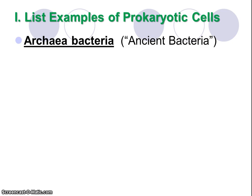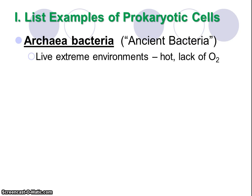The first type is called archaebacteria — we're going to refer to this as our ancient bacteria. They love extreme environments, so sometimes we call them extremophiles. They like things that are super hot, like the geysers in Yellowstone, or maybe even places where there's no oxygen available. Most creatures can't live in these environments. The name for being able to live without oxygen is anaerobic. This is why not all living things require oxygen, especially because of these guys.